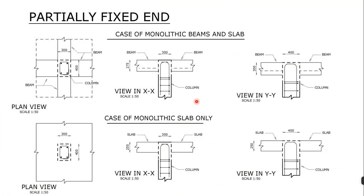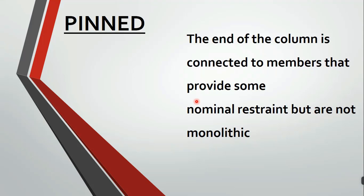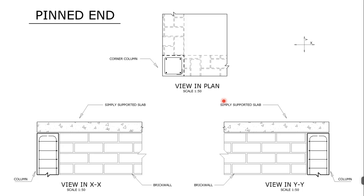Now we look at the pinned end. The end of a column is considered pinned when it is connected to members that provide some nominal restraint but are not monolithic. As an illustration, consider a corner column of a building with walls — columns are included to provide rigidity to the structure to avoid it being weak. Your brick wall terminates where you have a column, and the column rather than wall-to-wall provides that rigidity, though it is more expensive.